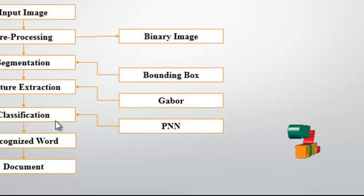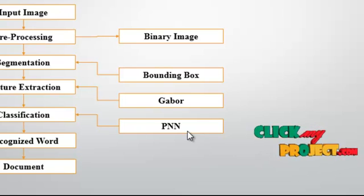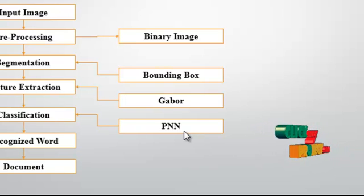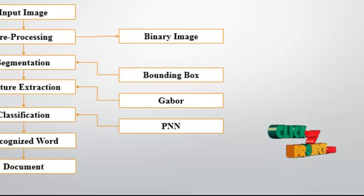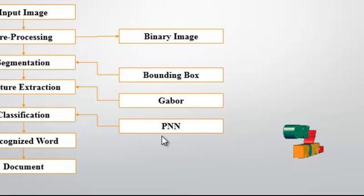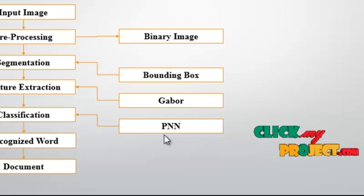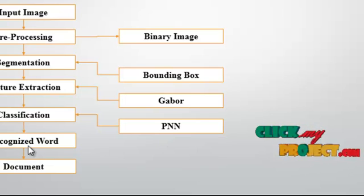After feature extraction, classification is undertaken. For the classification, we use the PNN — PNN is abbreviated as Probabilistic Neural Network. In the classification, the train features as well as the test features are processed by the probabilistic neural network. The classification result is considered as the recognized word, which comes out from the classification.